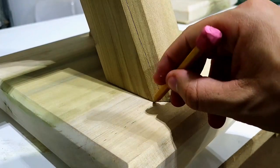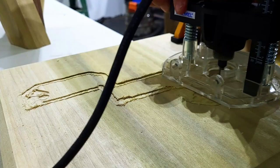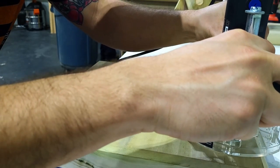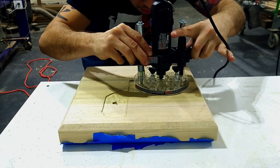To attach the legs to the top and bottom, I decided to route out a space for the legs to sit in. I got the plunge router attachment for my Dremel, and I got to say, I really like it. It's super handy.